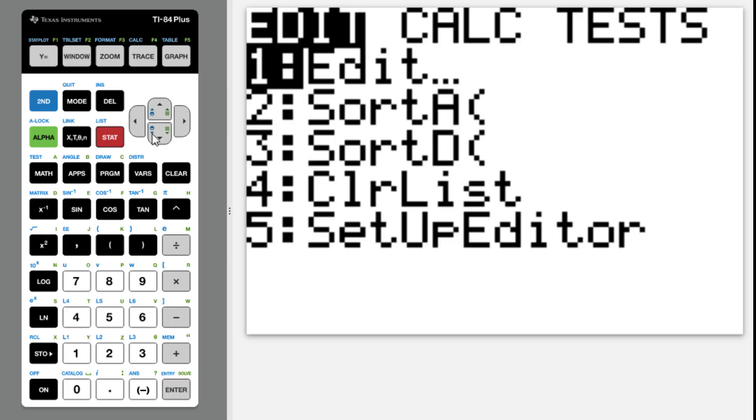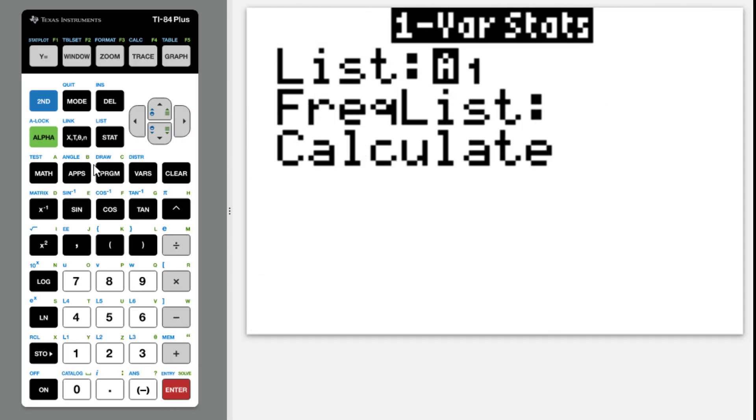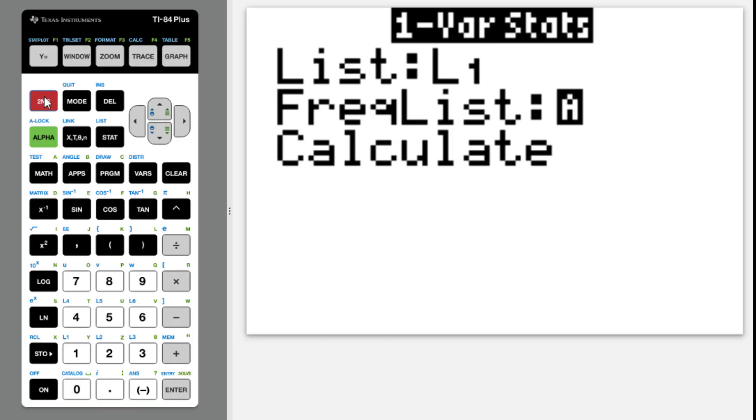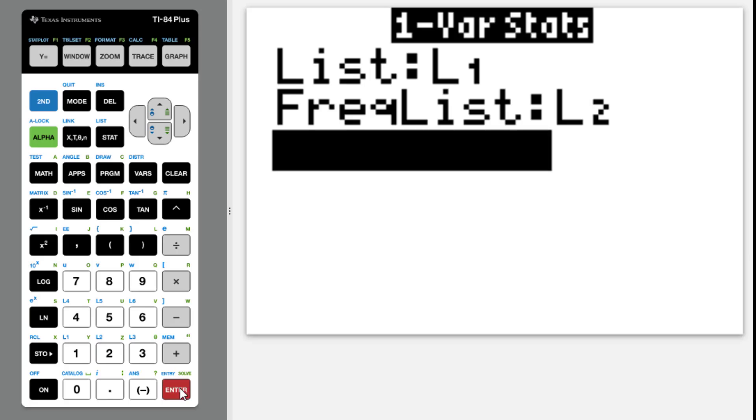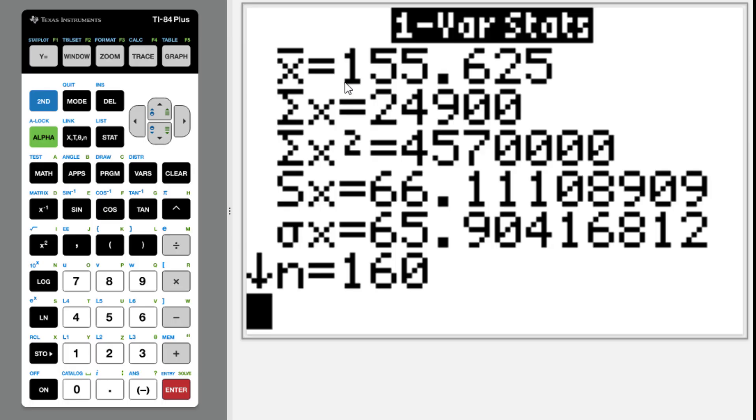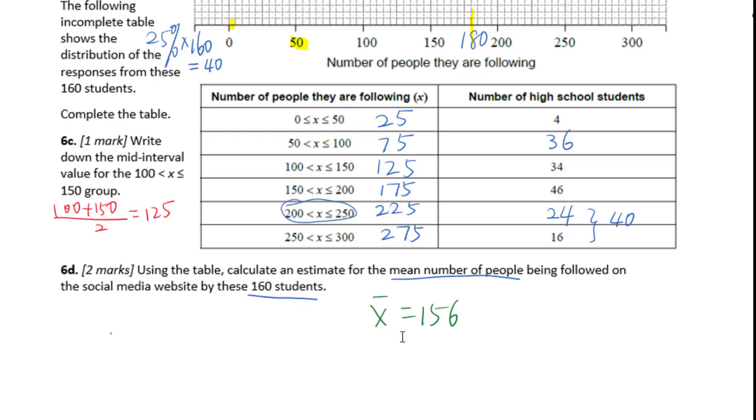Then go back to stat, calculate, one-variable stats. Don't forget for the frequency list, second to L2, then enter. So we get the mean 155.625. Three sig figs will be 156 people. So the mean number of people being followed on the social media is 156.